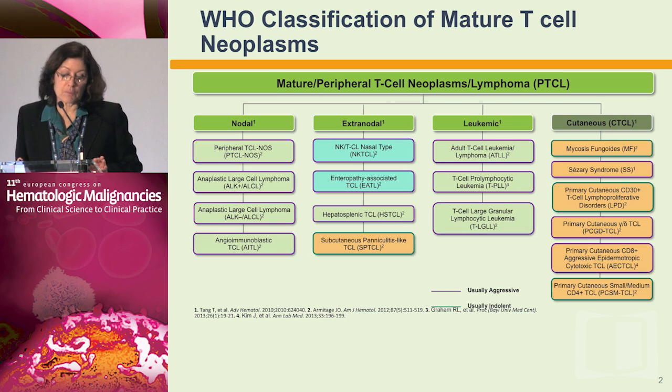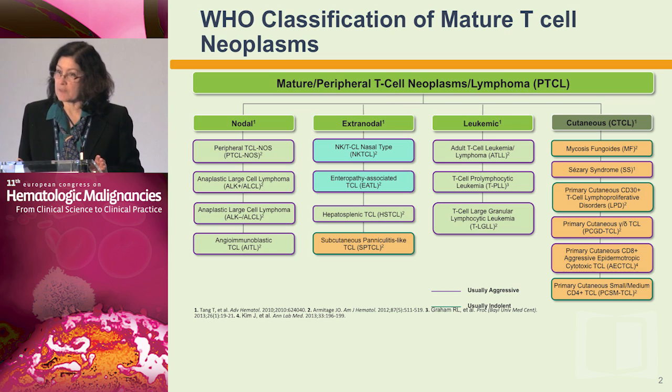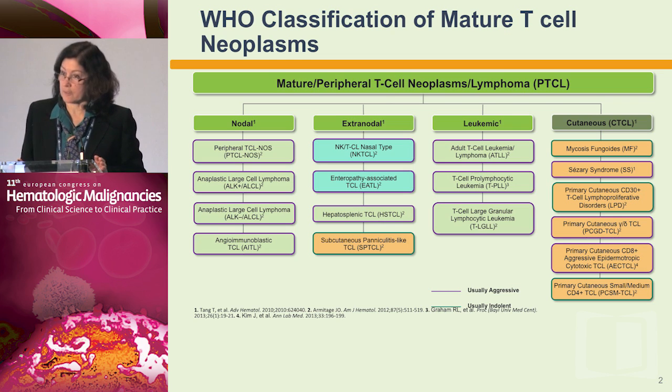Today we'll be focusing mostly on the more common nodal subtypes, including PTCL-NOS, angioimmunoblastic, and anaplastic large cell lymphoma. The rare subtypes have more specific therapies, and most of these are not that common in the West, whereas NK T-cell lymphoma and HTLV1 are more common in the Far East and in Japan.